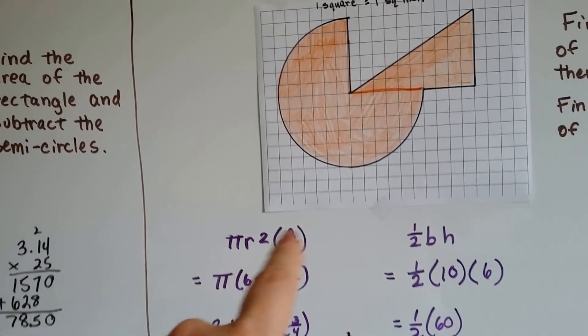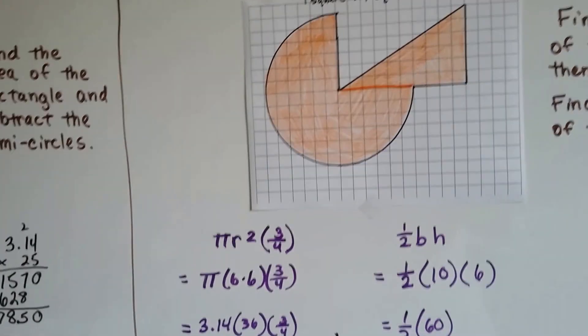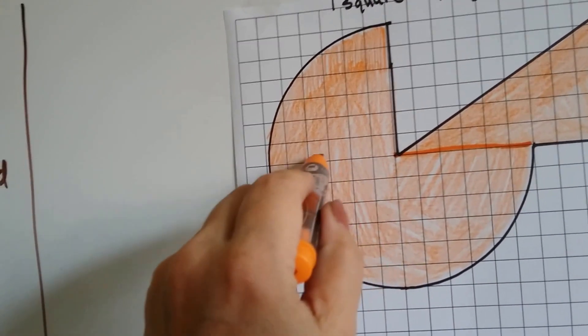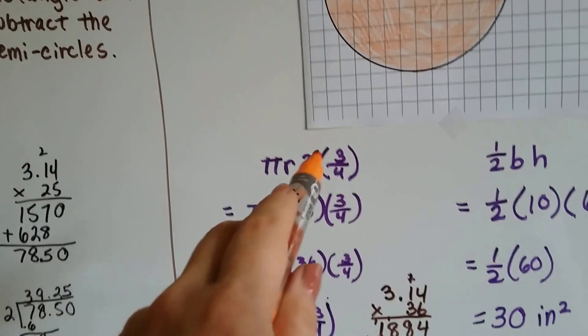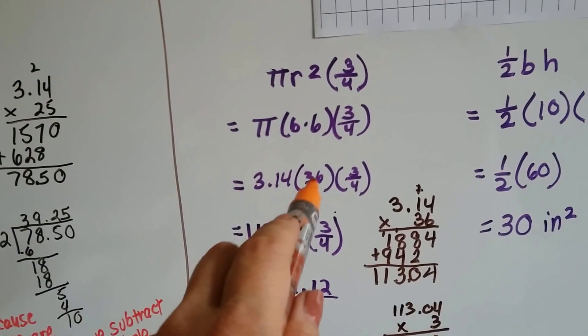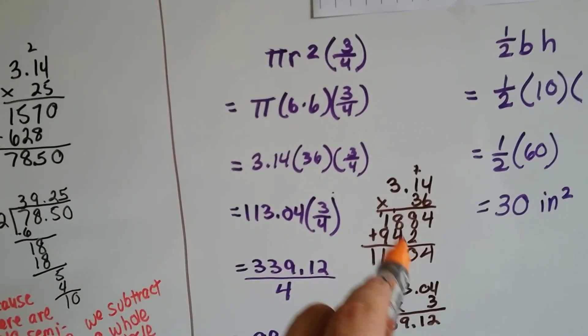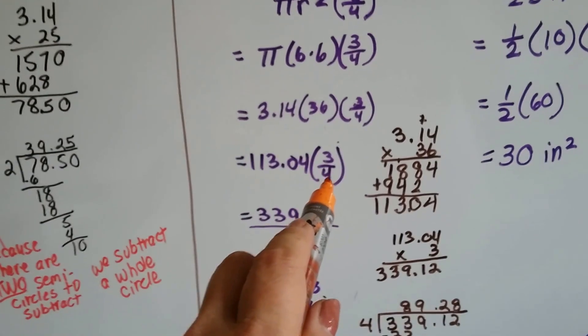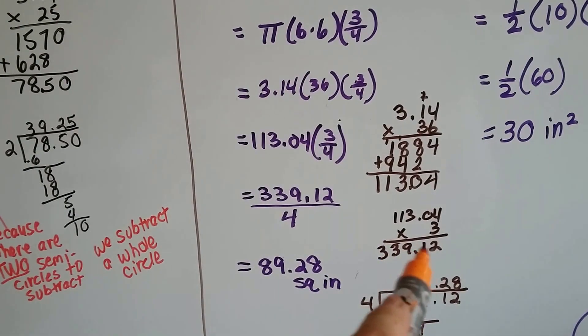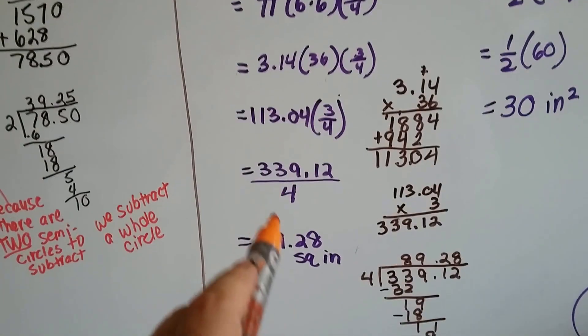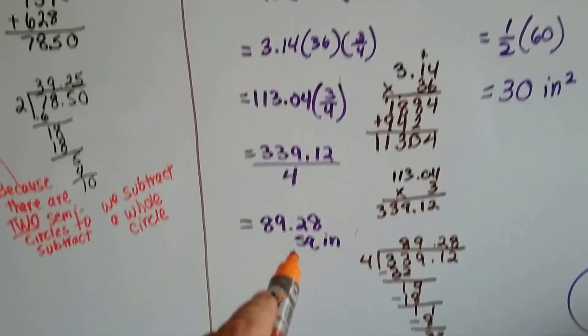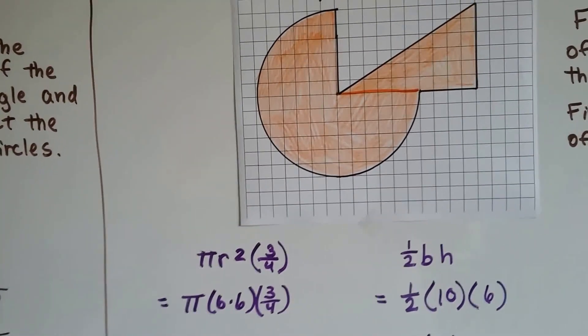The area of a circle is pi r squared. I'm going to multiply that by 3 fourths because we've got a fourth missing and we count its radius 1, 2, 3, 4, 5, 6. It's got a radius of 6. Because that's squared, we're going to do 6 times 6 which is 36. Then we're going to do pi, 3.14 times the 36 and get 113.04 and that has to be multiplied by the 3 fourths. 113.04 times 3 is 339.12 and that's over 4. We divide this by 4 and we get 89.28 square inches for the 3 fourths of a circle.